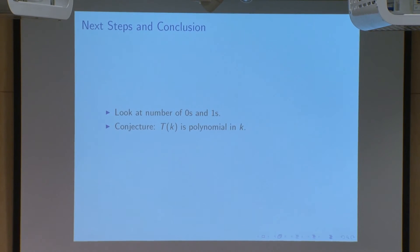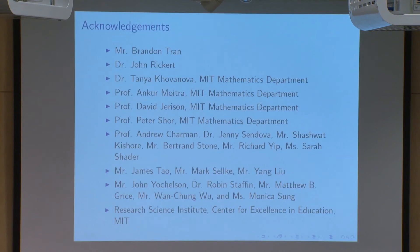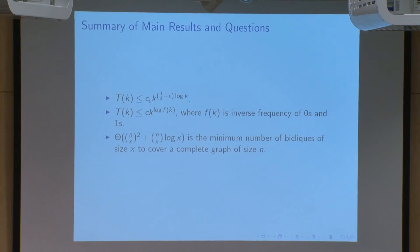In conclusion, demonstrating the connection between the number of zeros and ones and the maximal size tournament code upper bound points us toward trying to further improve that bound. I conjecture that T(k) is in fact polynomial in k. I would like to acknowledge my mentor Mr. Brandon Tran, my tutor Dr. John Rickert, Dr. Tanya Kovanova of the MIT mathematics department, and all of my sponsors — the CEE, RSI, and MIT — for allowing me to conduct my research here this summer. Thank you.